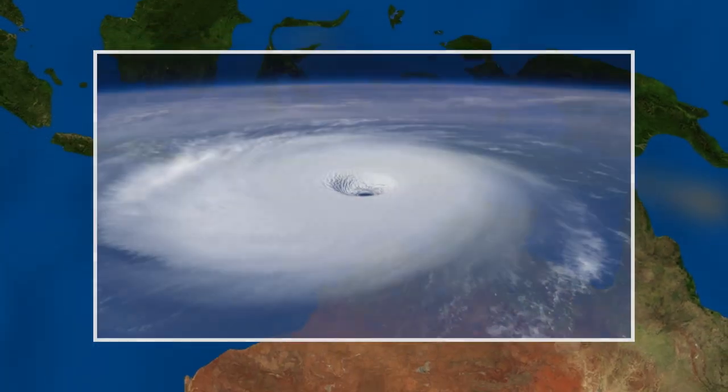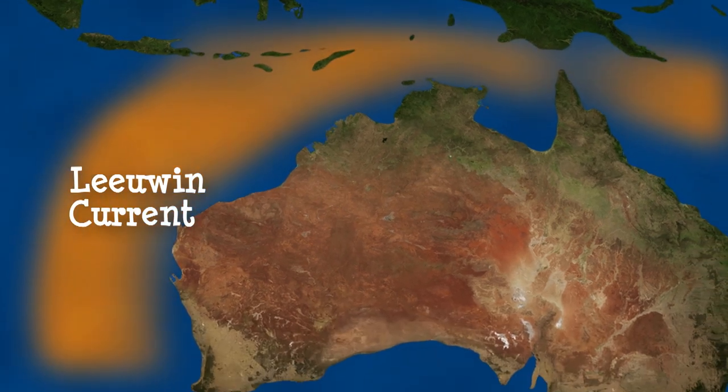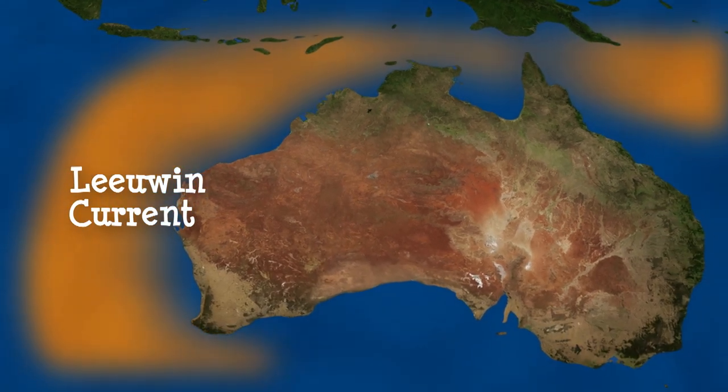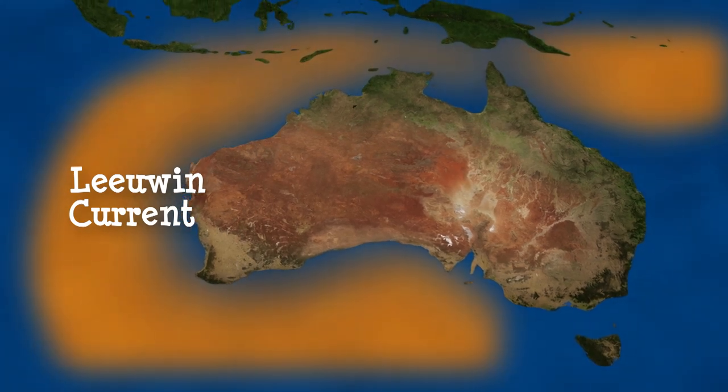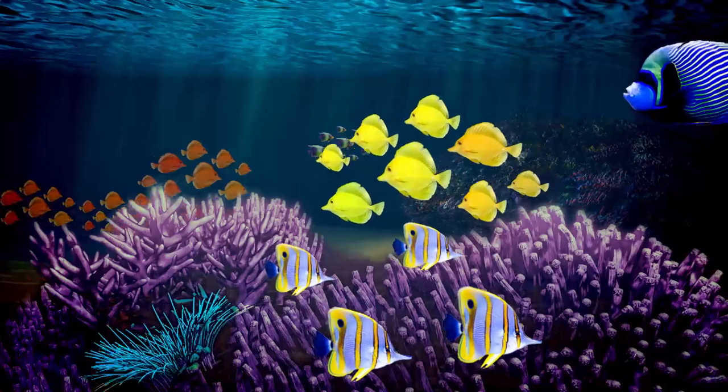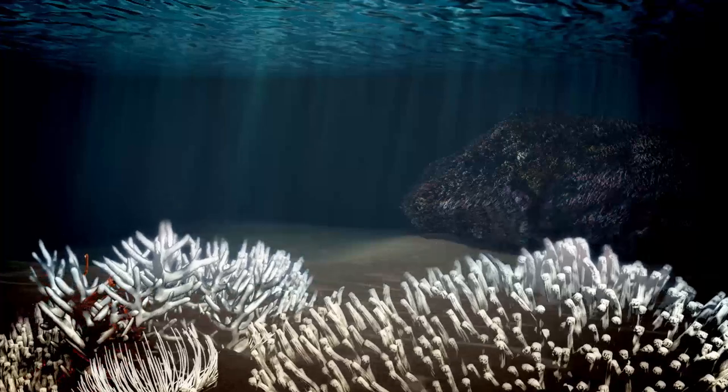In Western Australia, the Lewin Current tends to be weaker and cooler during El Niño events. During the 2010-2011 La Niña, marine waters that were up to five degrees warmer than usual caused mass deaths of marine life, as well as coral bleaching along the Western Australian coast.